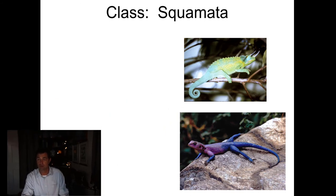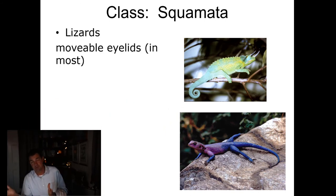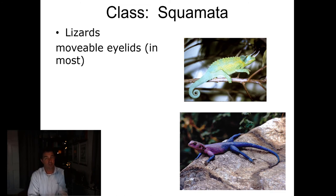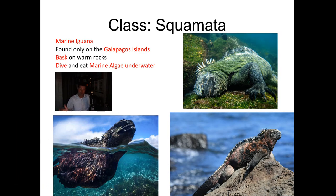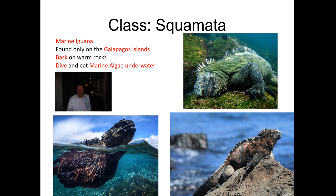Next we'll talk about the group Squamata — these are the snakes and lizards. Most people think of lizards as having legs, but there are lizards without legs. The distinguishing character is that nearly all lizards have moving eyelids. There is really only one truly marine lizard, and that is the marine iguana, found only on the Galapagos Islands. They bask on warm rocks, then dive into really cold water and actually eat marine algae underwater. Most iguanas are herbivorous. The marine iguana dives down, eats the algae off the rocks below, and is a very good swimmer.